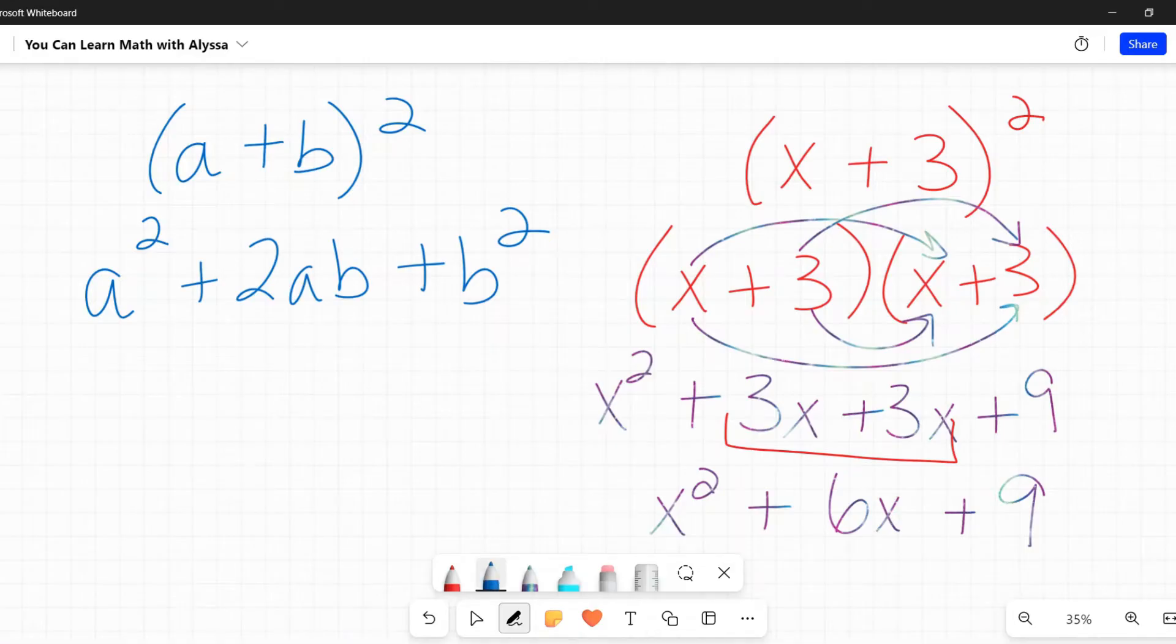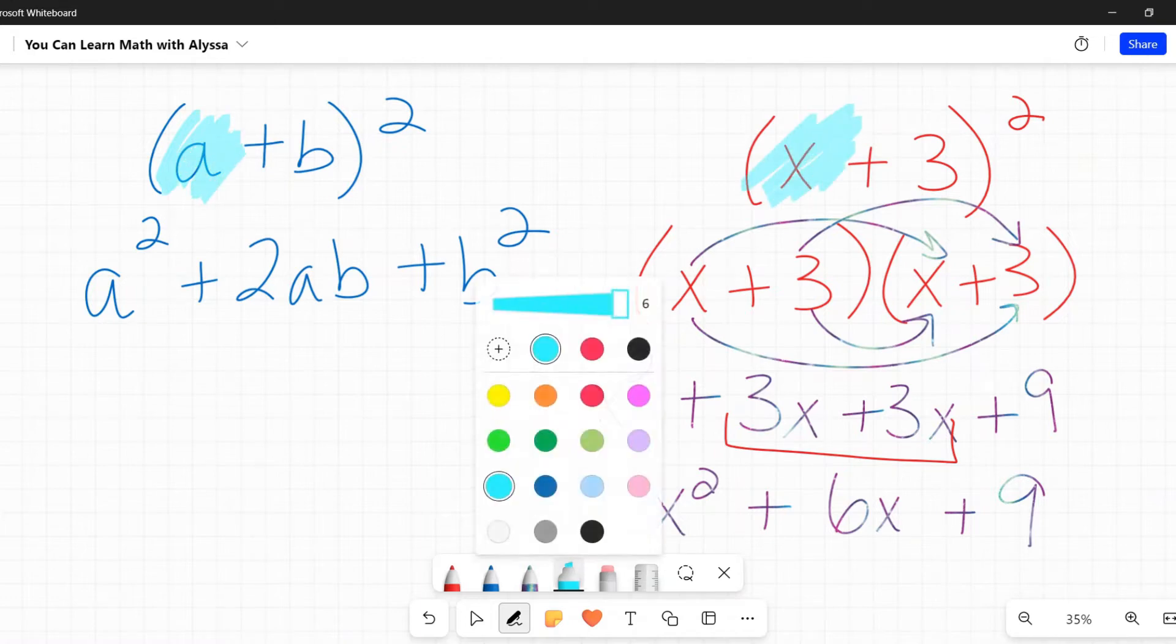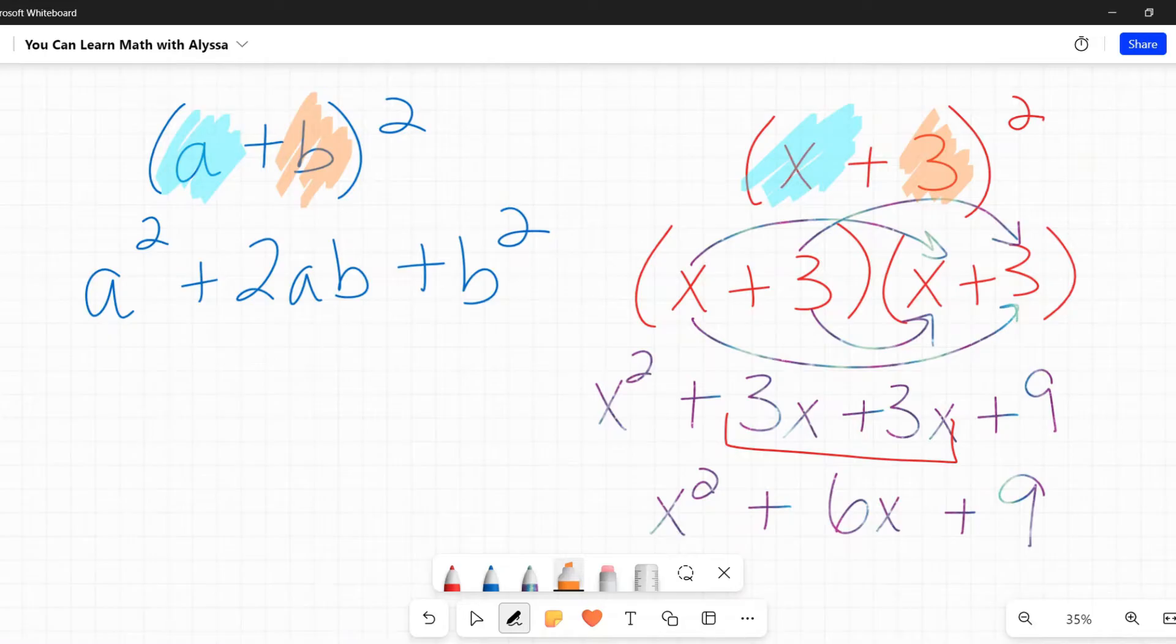Then I have my two like terms. I need to combine those like terms, and I get x squared plus 3x plus 3x is 6x plus 9. Now, if I had not done this multiplication, if I had just used this formula, what would my answer have been? I would have looked at this x plus 3.